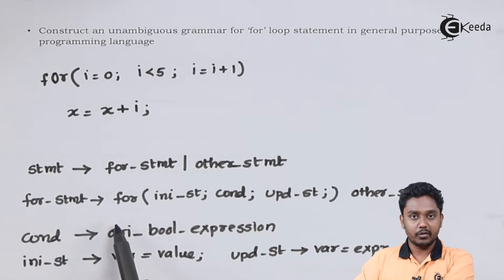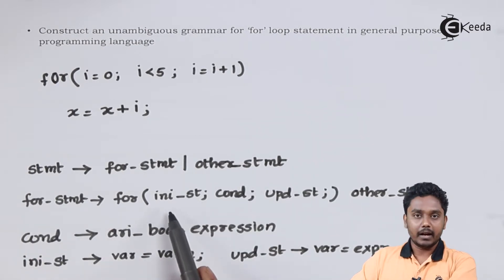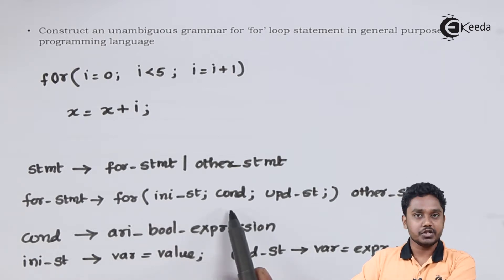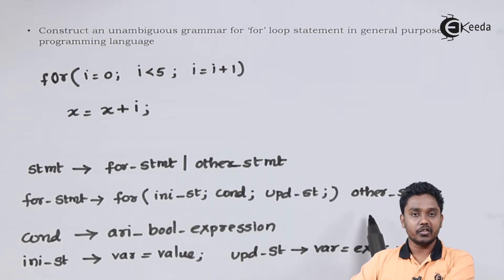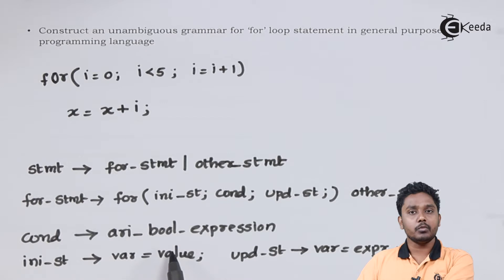The statement could be a for statement or some other statement. A for statement starts with a for. Within bracket there might be initialization statement, a condition check and an updation statement. At the end, there is other statement which has to be executed on following the for loop. The condition could be either an arithmetic condition which evaluates to 0 or 1 or it may be a boolean expression depending upon the condition. An initialization statement could be a variable equal to some value. An updation statement could be a variable equal to some expression.